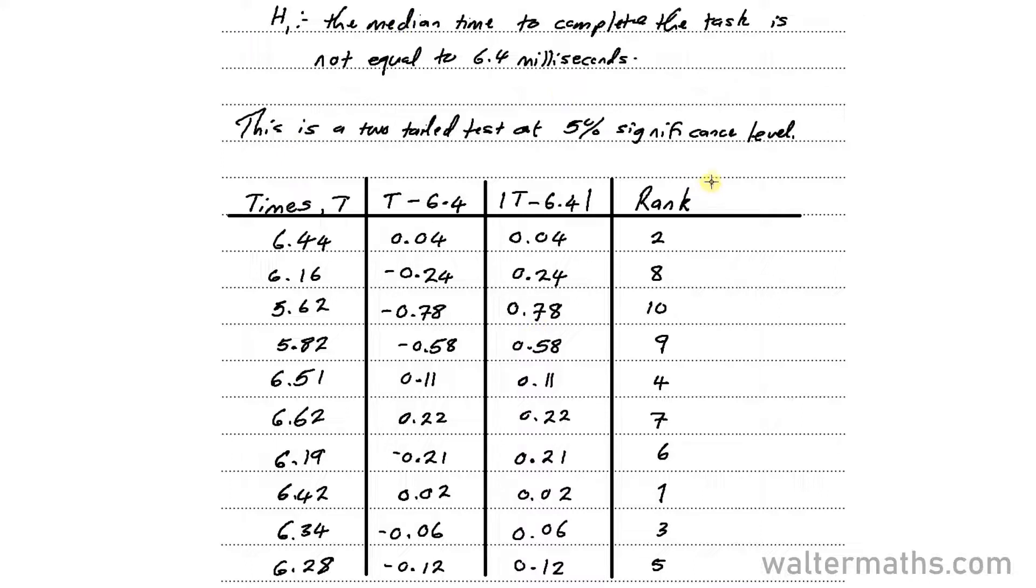So the last column that I can have here is the column for the signed rank. So I'm just going to put back the signs, the original signs that we had on the differences here to these ranks. So 2 was originally positive. 8 with a negative on it, so that's minus 8. Then for 10, that's minus. For 9, that's negative, so that's minus 9. Then we have 4, we have 7. Then this one here, 6 is minus, so that's minus 6. 1 is positive, 3 is negative, and 5 is negative. So that's minus 5 here. So these are the signed ranks. That's the table we need to make.